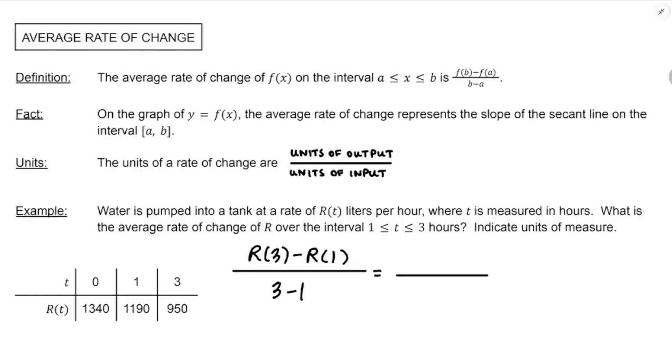So r of three minus r of one divided by three minus one. And then we're going to pull those values from the table. We've got r of three, we've got r of one. So it'll be 950 minus 1190, and we're going to divide by three minus one, which is two. I think we can do that. But 950 minus 1190, without a calculator, that's the type of thing that you could make an arithmetic error on. So I'd recommend you just leave it unsimplified because that's an option we have.